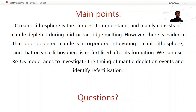So, just to finish up — oceanic lithosphere is the simplest thing to understand, which is why I started with it. It mainly consists of mantle that was depleted during mid-ocean ridge melting. However, there is evidence that older depleted mantle is incorporated into young oceanic lithosphere, and that oceanic lithosphere is re-fertilized after its formation. We use rhenium-osmium ages to investigate mantle depletion events and re-fertilization.